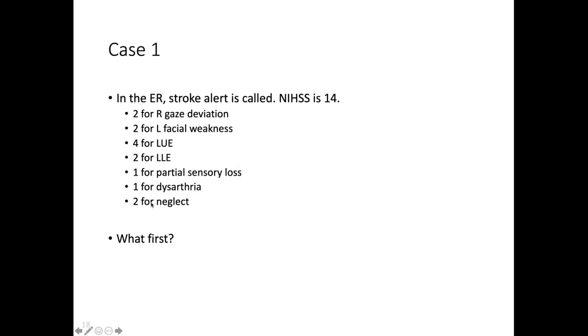This patient's stroke scale is 14. He has right gaze deviation, left facial weakness, his left arm is plegic (four is the highest you can get for arm), his left leg is two which means he can lift it anti-gravity but it falls to the bed in 10 seconds. He has partial sensory loss on the left side, one point for dysarthria, two for neglect. He's rolling into the ER with a stroke scale that's not low. First thing you do is easy stuff - make sure his ABCs are okay, and make sure it's not symptomatic hypoglycemia or hyperglycemia. His finger stick is a little up but okay.